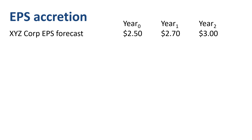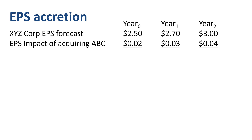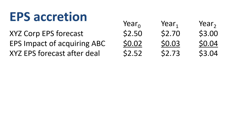XYZ company is considering buying ABC Corporation. As a result of the transaction, the EPS is expected to go up by $0.02 this year, $0.03 next year, and $0.04 two years from now. This makes the expected EPS of the combined company, after doing the deal, higher than the expected EPS without doing the deal, which is called accretion.